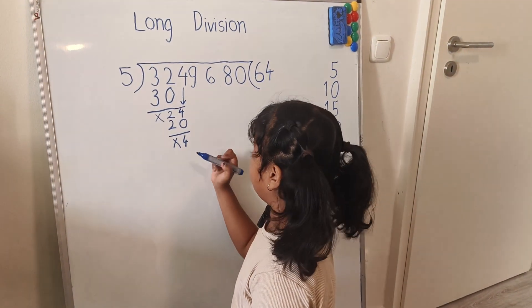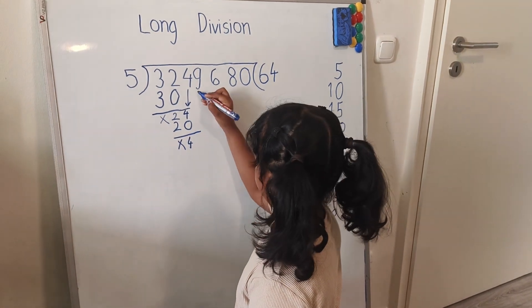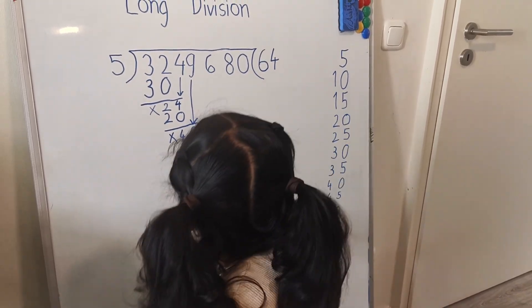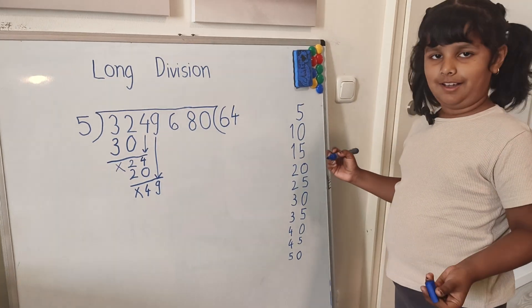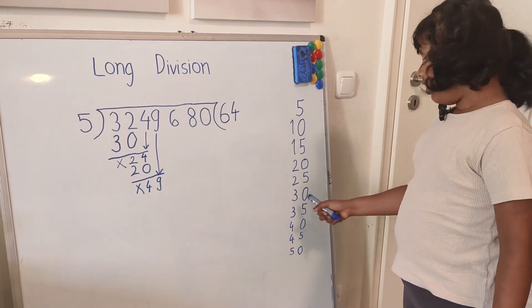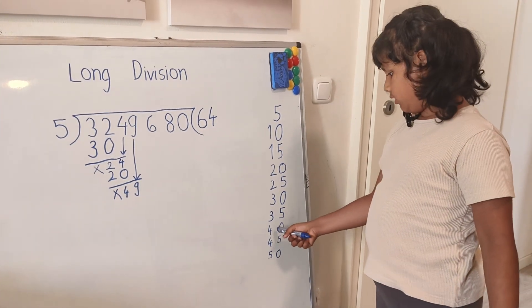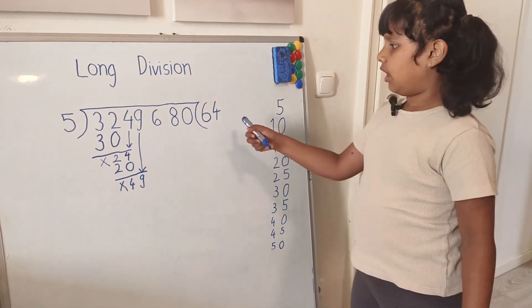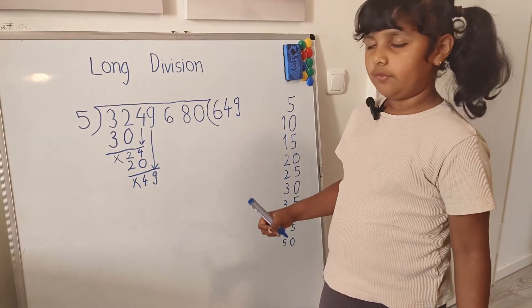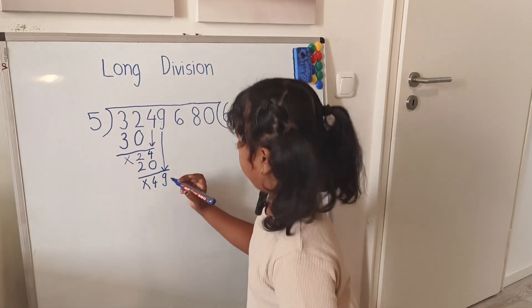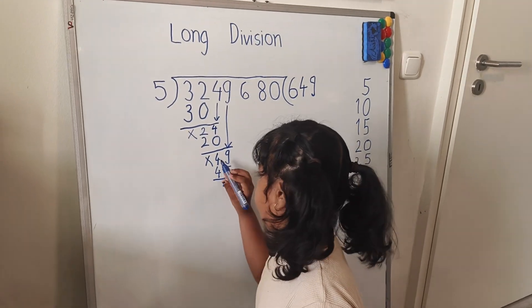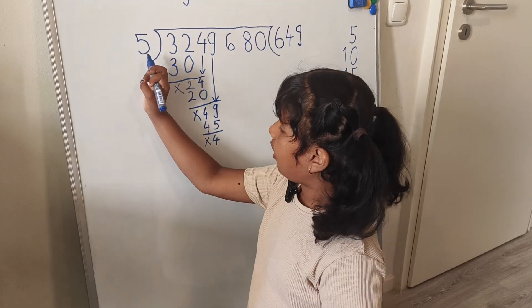Now here 5 is a bigger number and 4 is less, so I will take down 9. So I will take down here 9. Now here is 49, so I will count from the 5 table. Five times 1 is 5, five times 2 is 10, five times 3 is 15, five times 4 is 20, five times 5 is 25, five times 9 is 45. So I will add here 9, and five times 9 is 45. Four minus 4 is nothing.